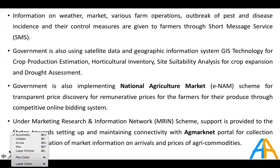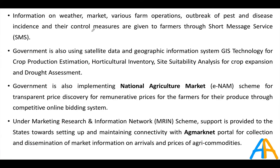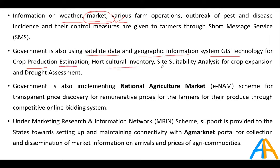The mKisan portal provides not only farm-related advisories but also weather-related and market-related information covering various technologies and farm operations. Knowing nearby markets and their price offerings is very important for farmers. The government also uses satellite data and Geographic Information System (GIS) technology to estimate crop production, horticulture inventory, and site suitability.